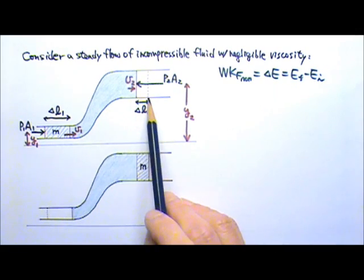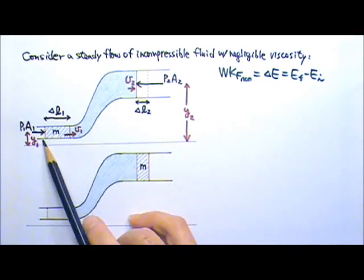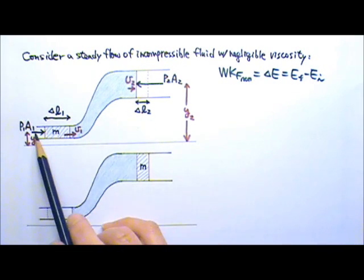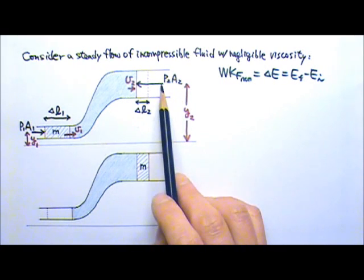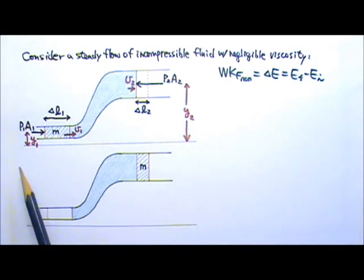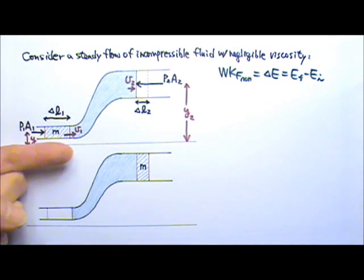There are two non-conservative forces acting on this part of the fluid. The pressure times area on this side and the pressure times area on that side. The work done is the force times the displacement, and since over here the force and the displacement are in the same direction, the work is positive.